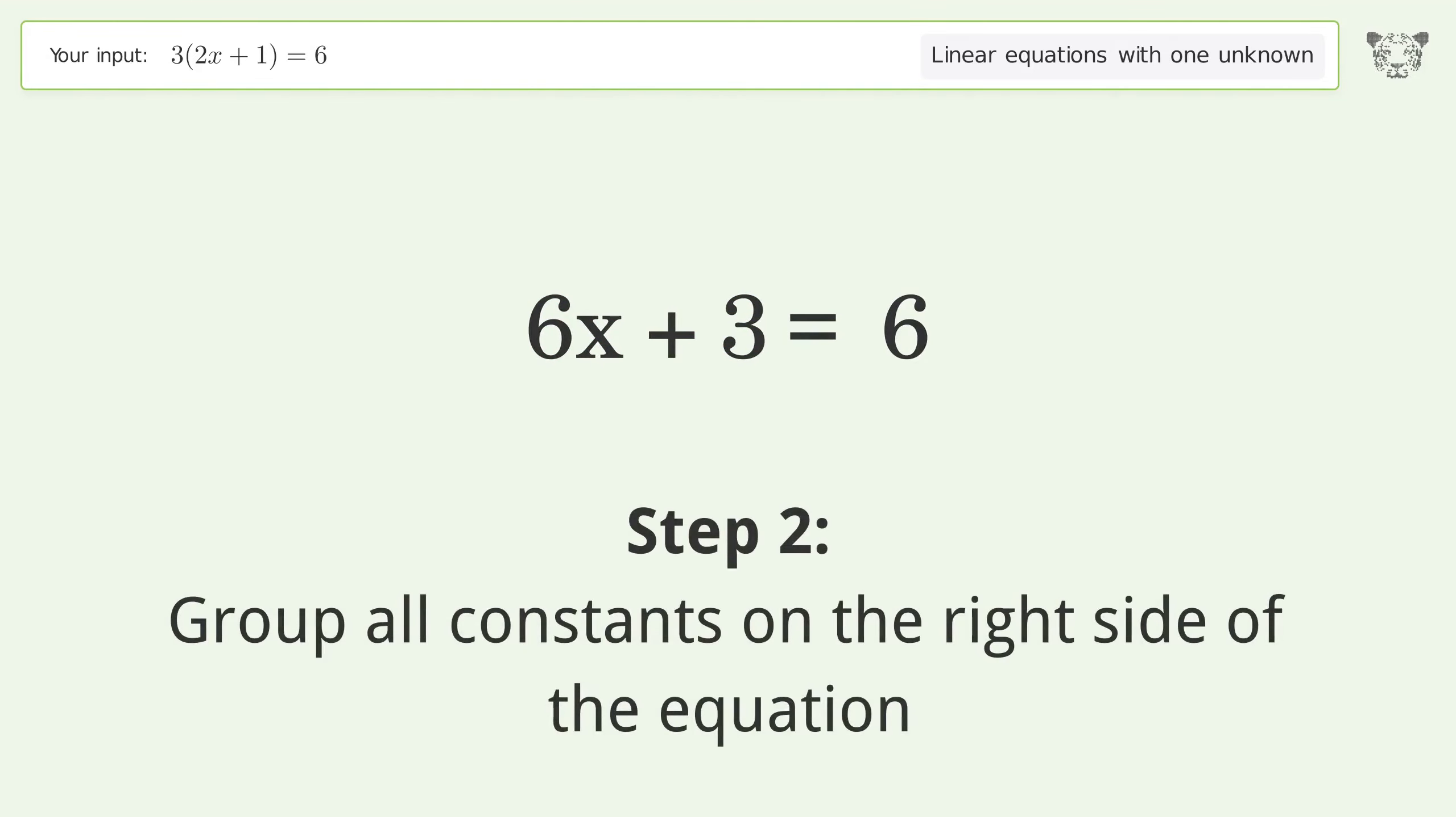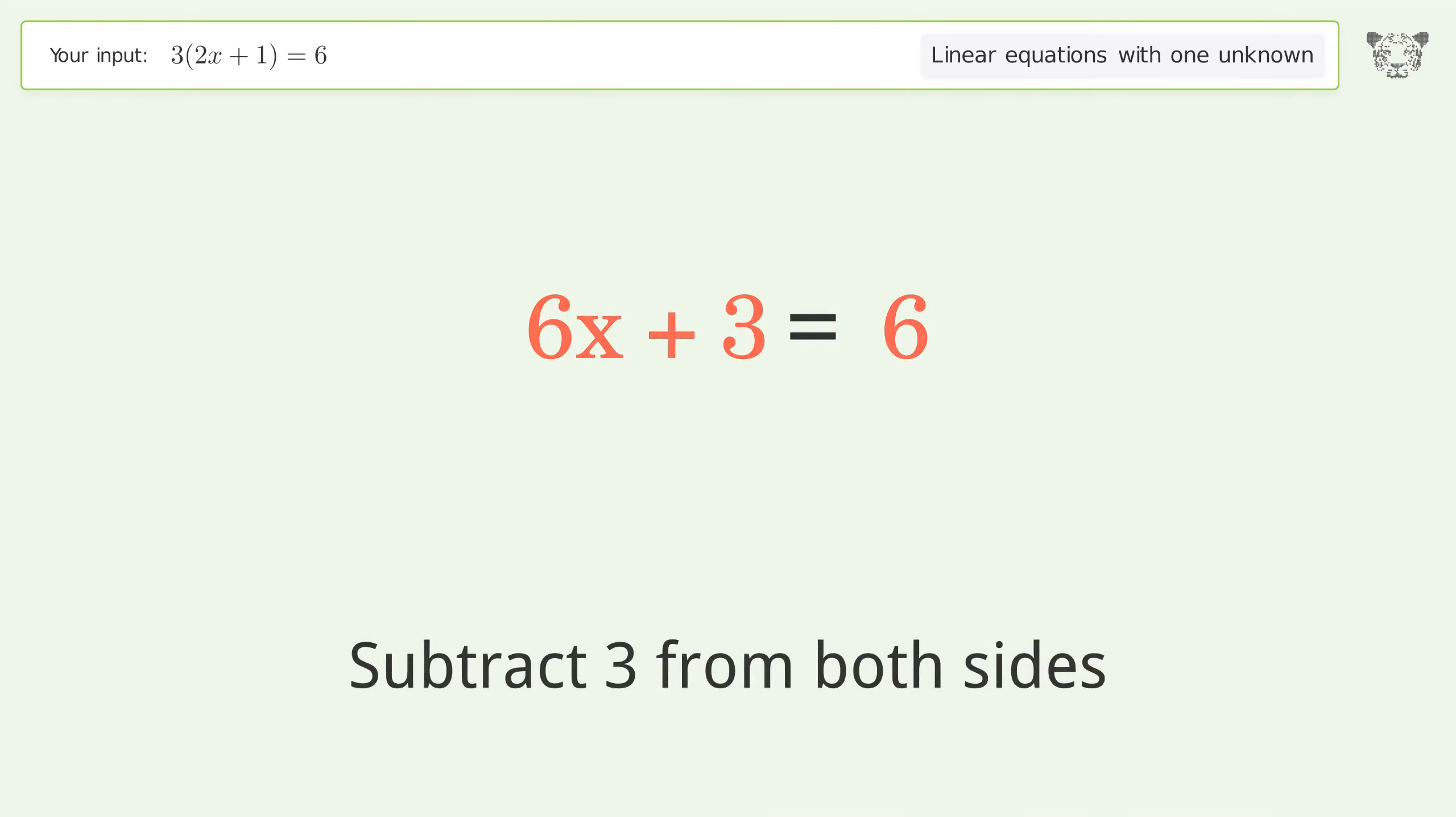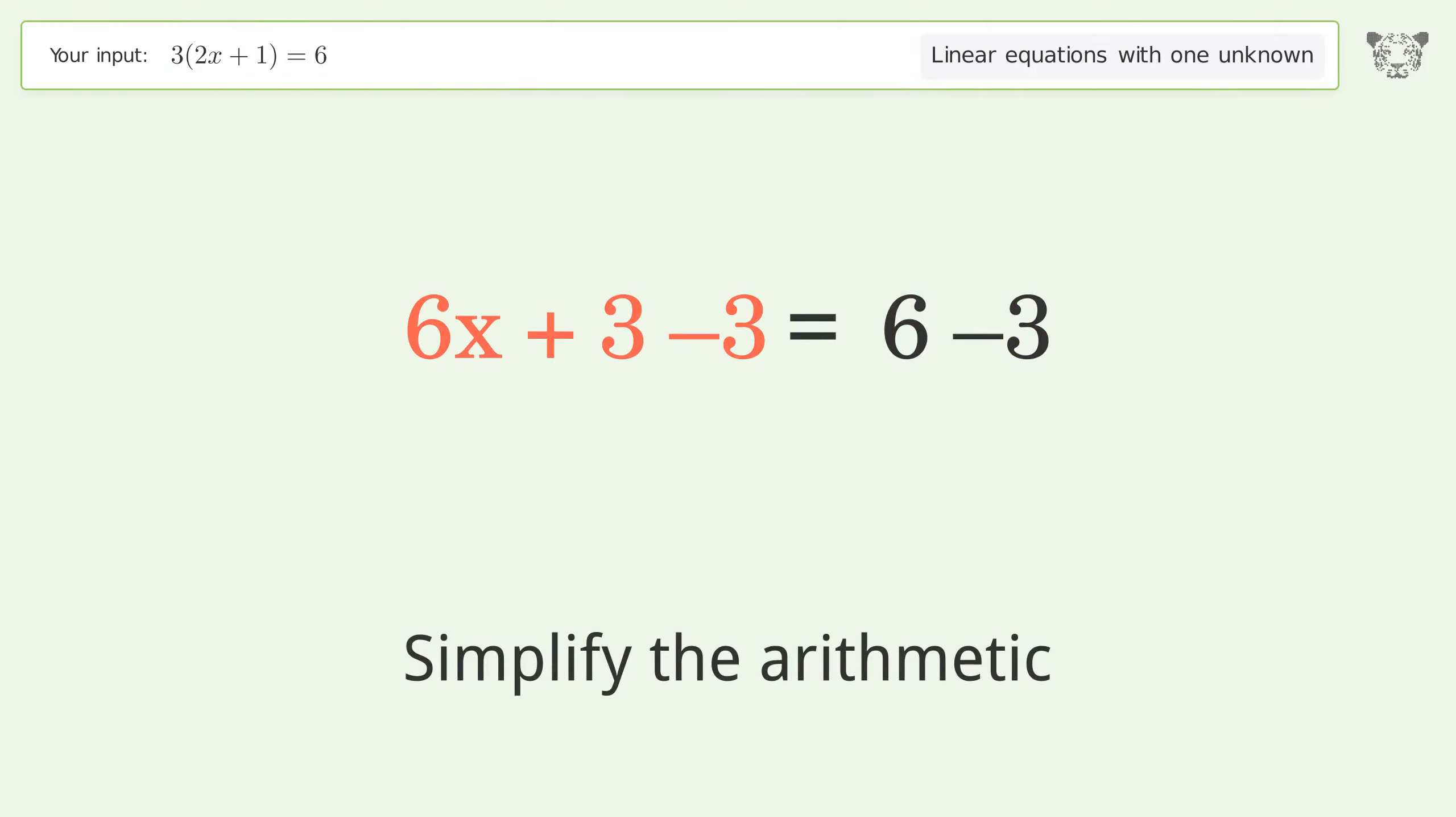Group all constants on the right side of the equation. Subtract 3 from both sides. Simplify the arithmetic.